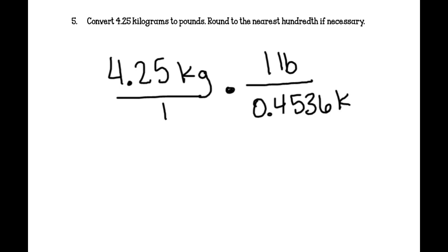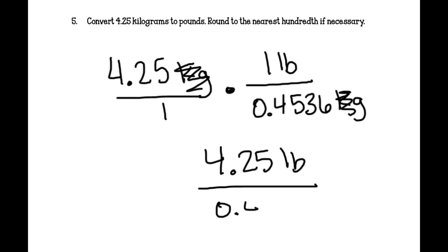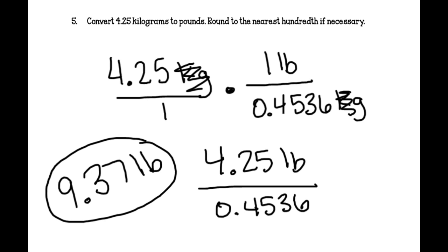So, we have 4.25 kilograms. I'm going to make it over 1. It's easier to do the multiplication. Times, for every 1 pound, there is 0.4536 kilograms. So, we cancel out our kilograms. And we're left with 4.25 pounds over 0.4536. We go ahead and we do that division and you get 9.37 pounds. Circle it and you're finished.